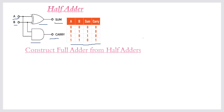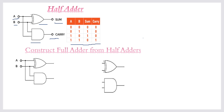Next, to construct a full adder from half adders, we need two half adders. I will take the first half adder, and to create the second half adder I will separately take an XOR gate and an AND gate.